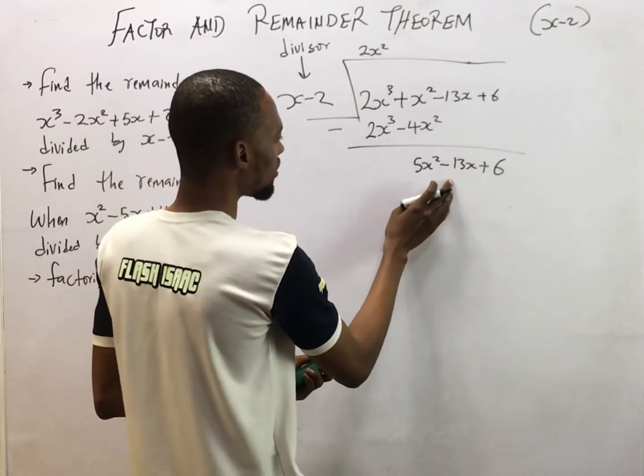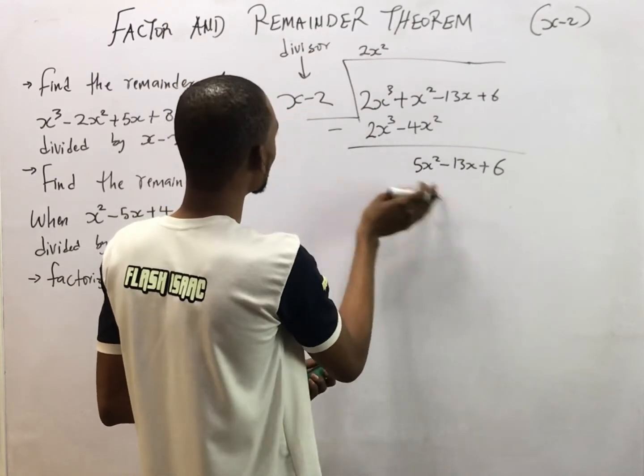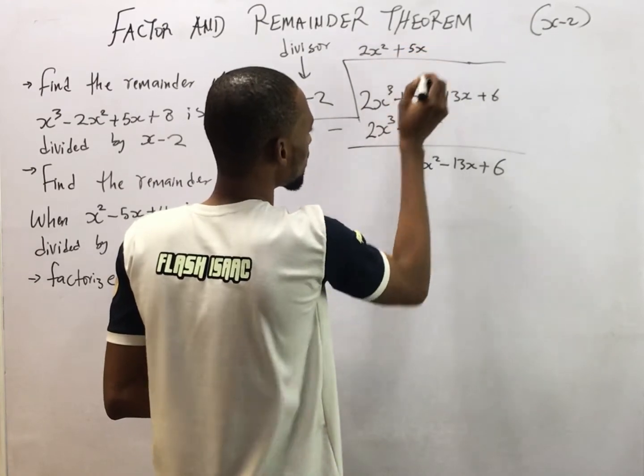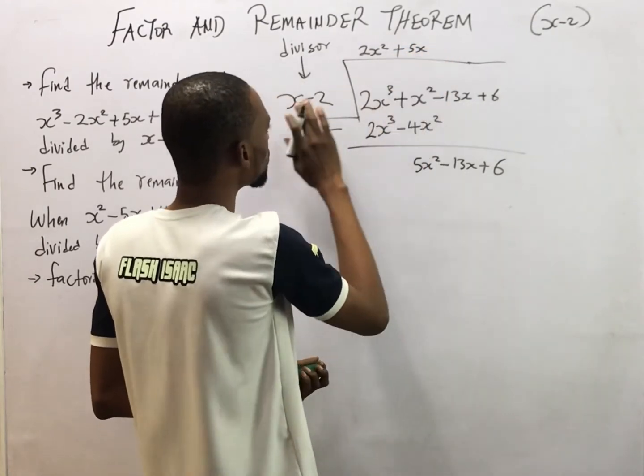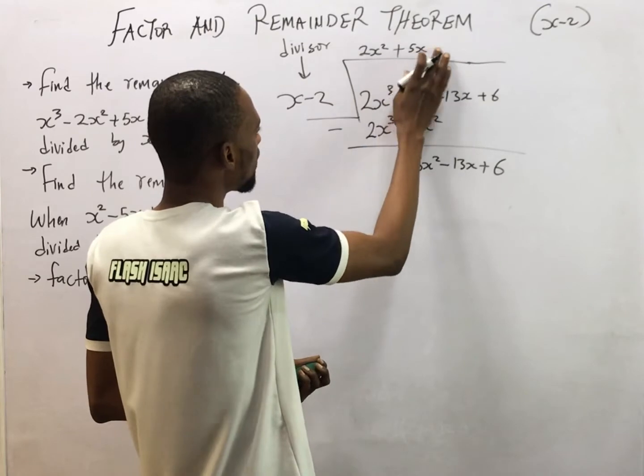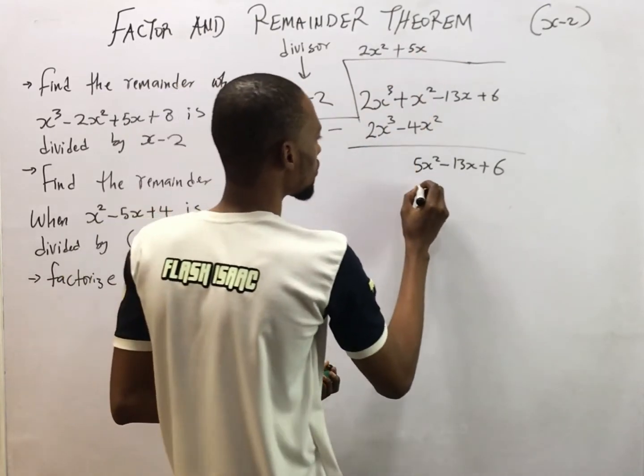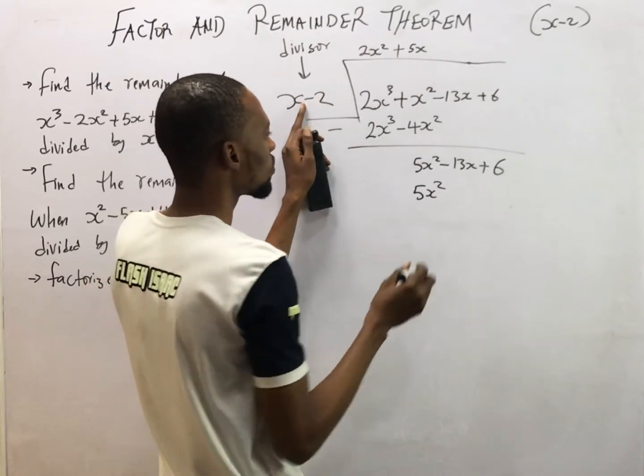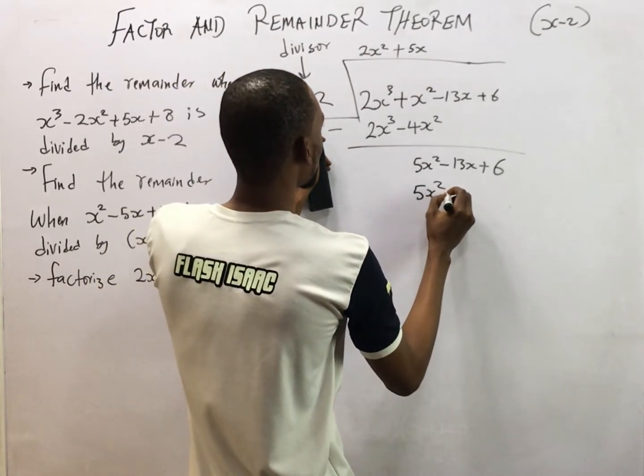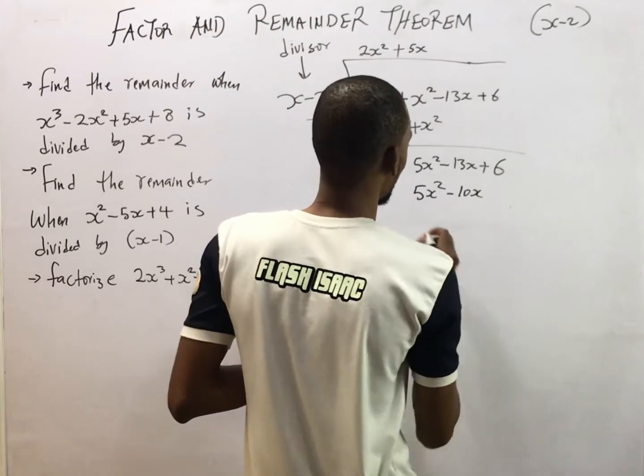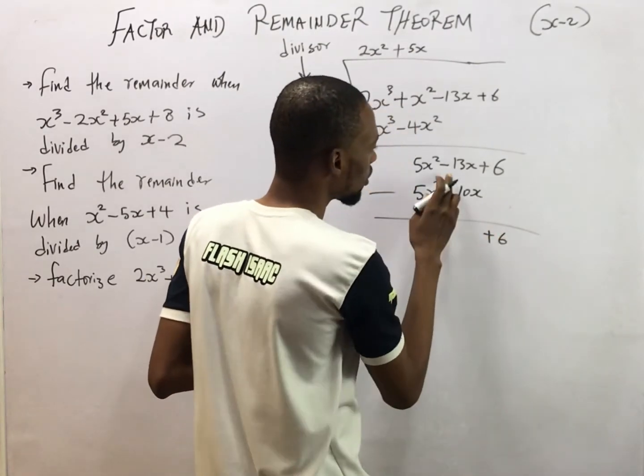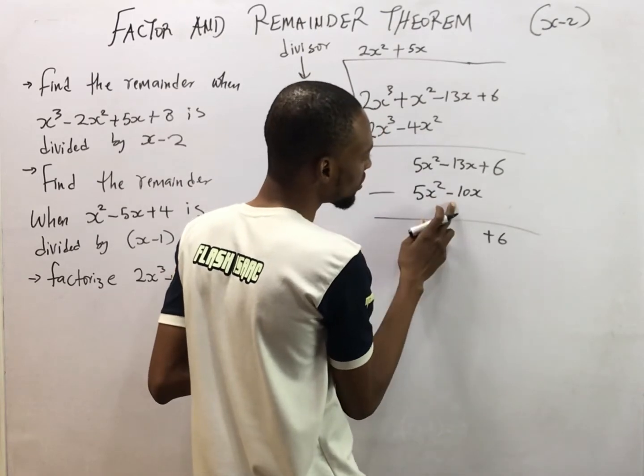Then we divide 5S squared by this. 5S squared divided by S would give you 5S. So plus 5S. Using this to multiply these two guys. 5S times S will give you 5S squared. 5S squared minus 5S squared is 0.